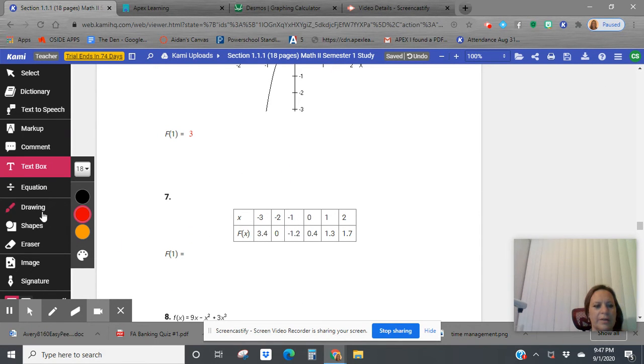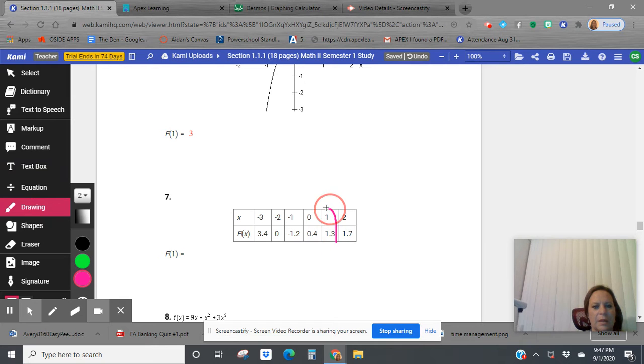What does f of one equal here? We say that f of one equals 1.3.